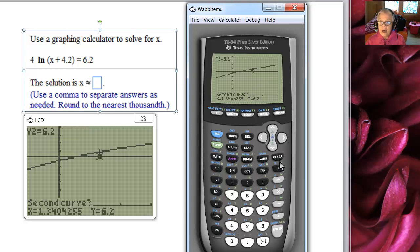Now the cursor is on y2 and guess means that we should move the cursor as close to the point of intersection as we can. There we are. I'll click enter and there's our answer.